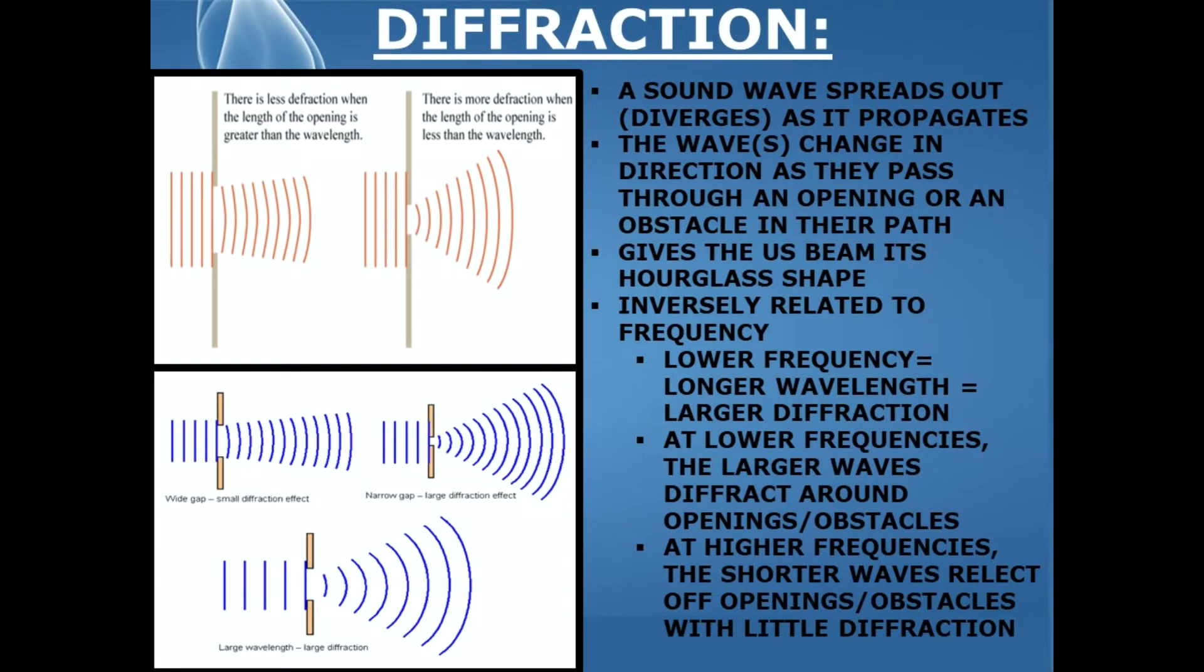A sound wave spreads out or diverges as it propagates deeper into the tissue. The waves change in direction as they pass through an opening or an obstacle in their path, and this gives the ultrasound beam its hourglass shape.